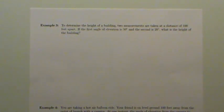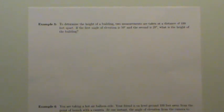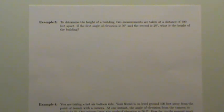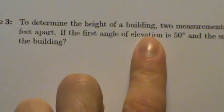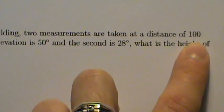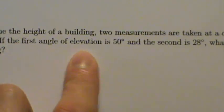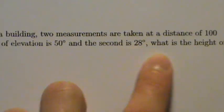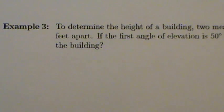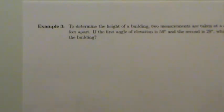Here's example three of applications of trig. If you want a copy of this worksheet to follow along with, check the video description — there's a link you can click to get a copy. Example three: to determine the height of a building, two measurements are taken at a distance of 100 feet apart. If the first angle of elevation is 50 degrees and the second is 28 degrees, what is the height of the building? First, we'll draw a picture to illustrate what's happening.